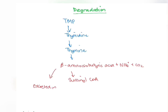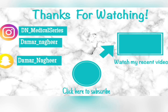Beta-aminoisobutyric acid is excreted in the urine and can therefore be a marker for the breakdown of TMP. In cancer patients undergoing chemotherapy or radiation, there is usually a high level of beta-aminoisobutyric acid in their urine. Thank you very much for watching this video on the synthesis and degradation of pyrimidines and a disease application.